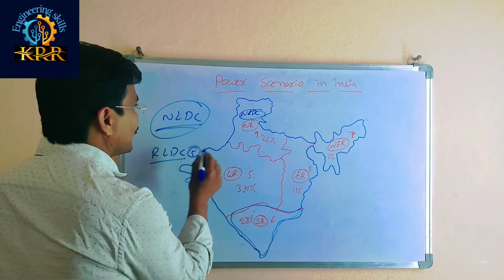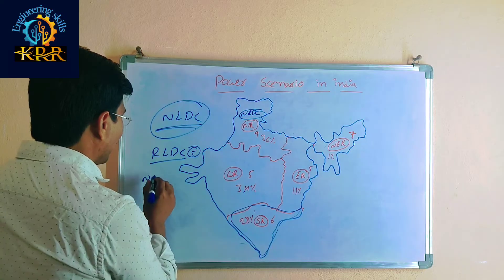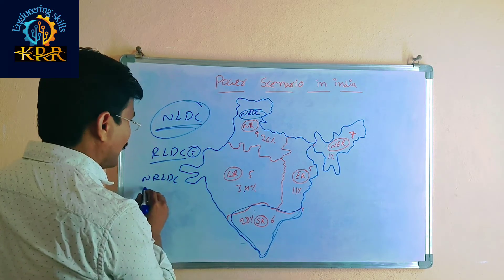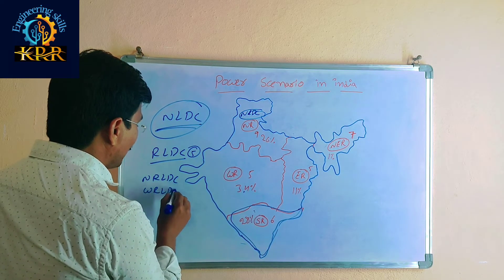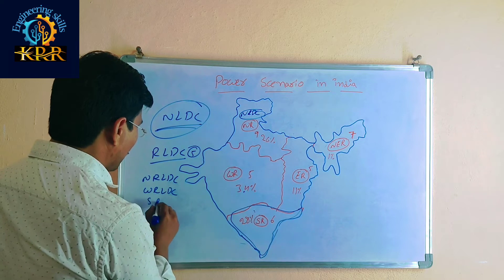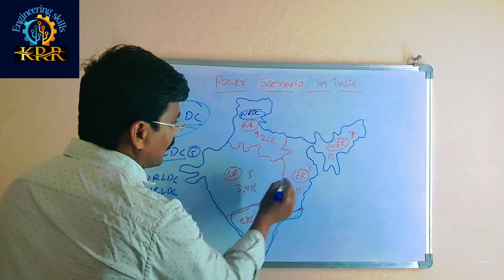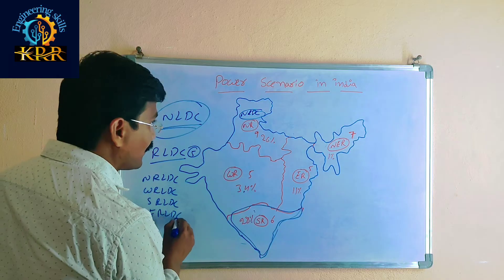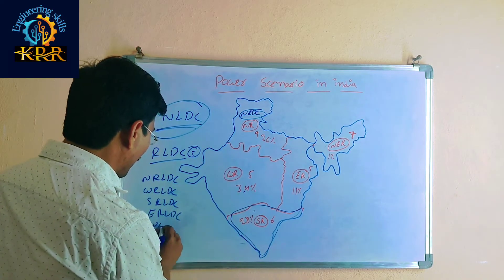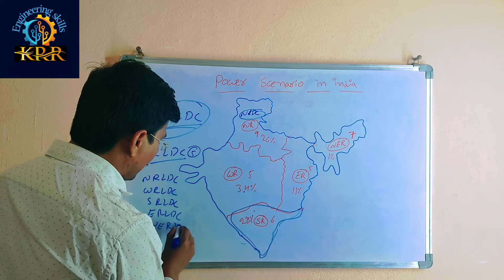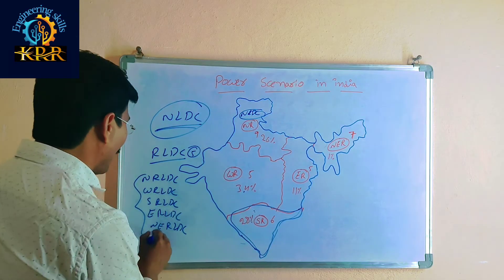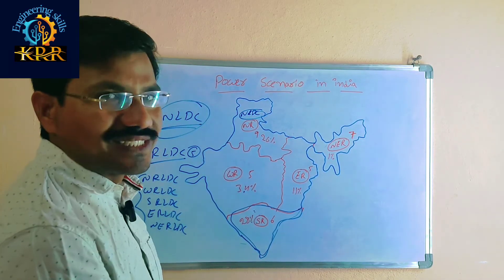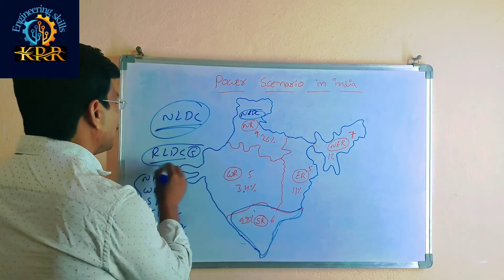Total RLDCs — there are 5 RLDCs: North RLDC, West RLDC, South RLDC, East RLDC, and North East RLDC. RLDC means Regional Load Dispatch Center.